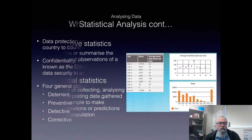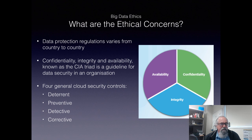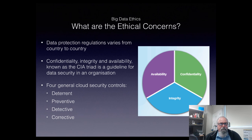What are the ethical concerns? Data protection varies from country to country — it's not really one set of standards, so we have to be careful where we're collecting data and make sure we adhere to local laws and regulations. Confidentiality, integrity, and availability — known as the CIA triad — is a guideline for data security in an organisation. Security is a very important area which we're not covering in great detail in this quick workshop, but it should be considered with any IoT or data gathering exercise.